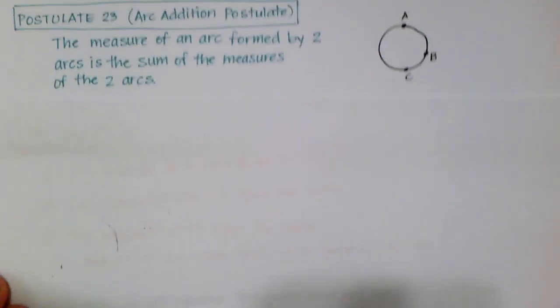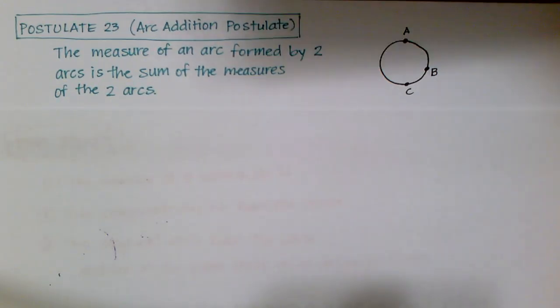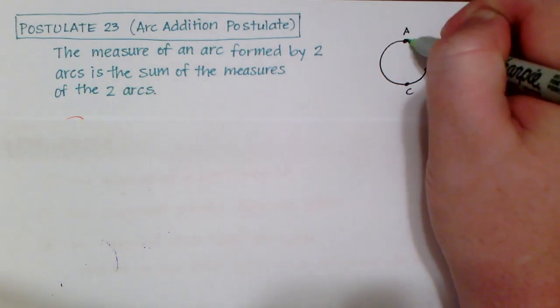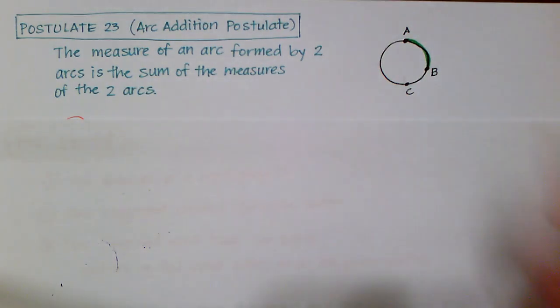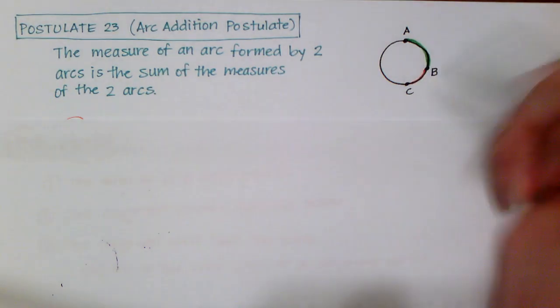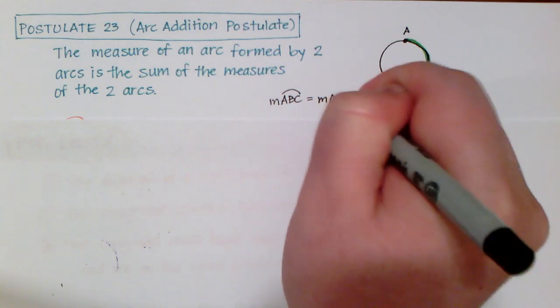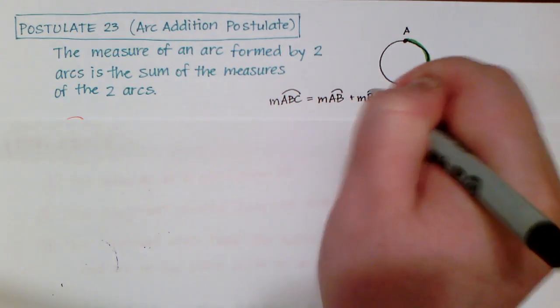I have a postulate for you. And it's titled Postulate 23. And this is the arc addition postulate. So, when you just see that kind of name right there, you automatically know that it's going to be talking about adding some arcs. So, the measure of an arc formed by two arcs is the sum of the measure of those two arcs. So, if I have, for example, AB and I also have BC, then really that's just telling me that the measure of ABC is equal to the measure of AB plus the measure of BC. Pretty self-explanatory.